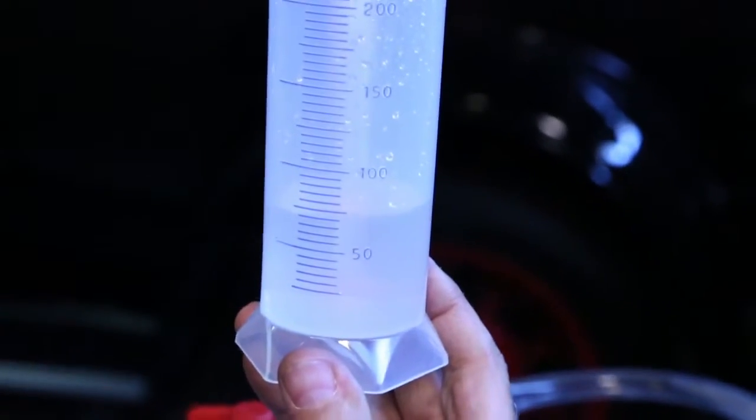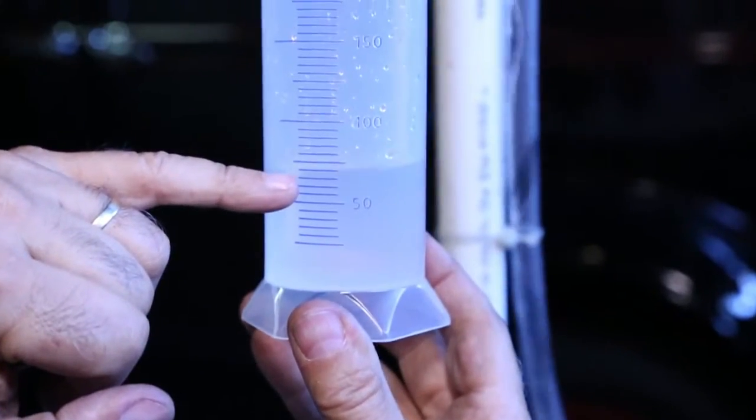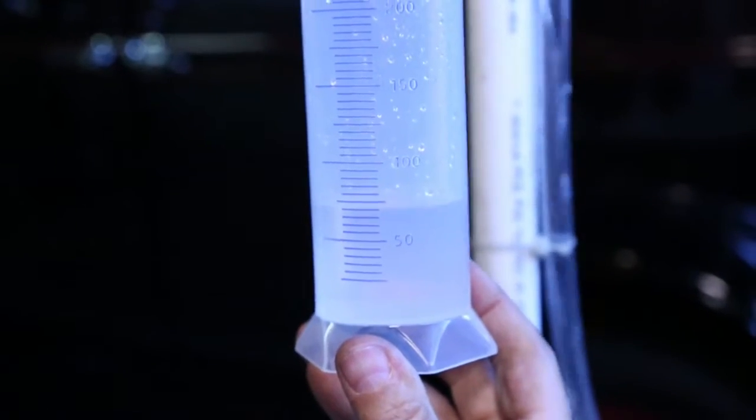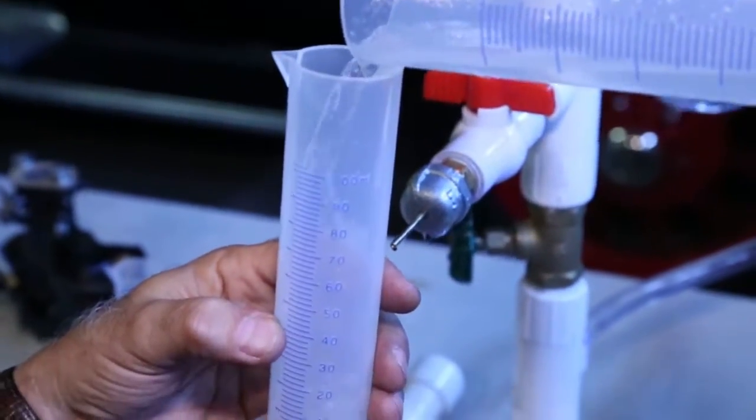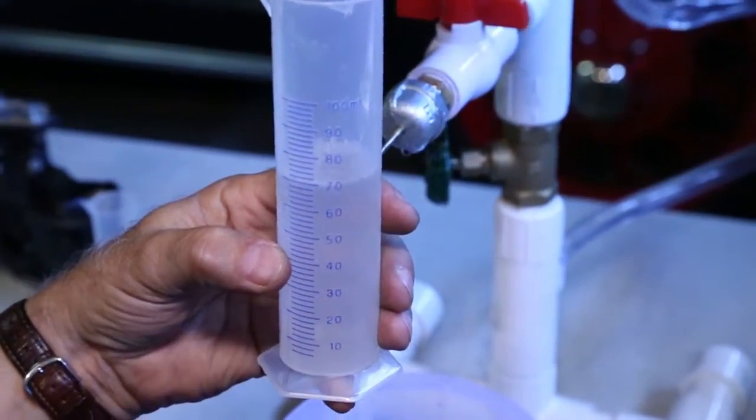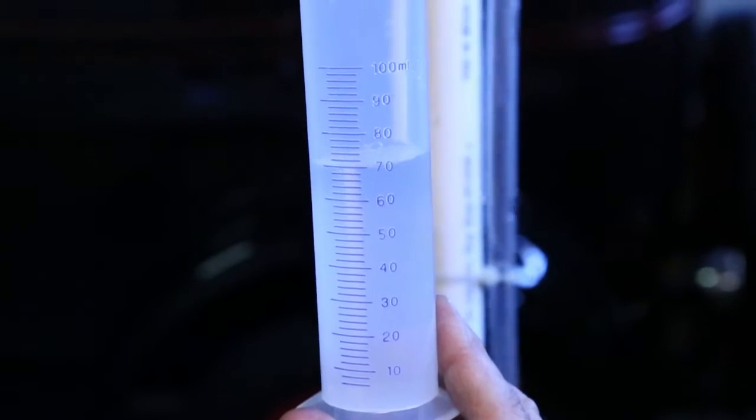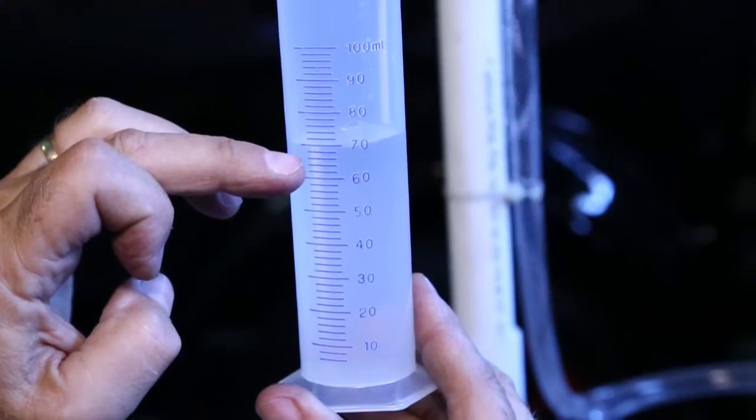So what did we get? Each line is 5 milliliters. So there's 50, 55, 60, 65. It's getting close to 70. If I wanted to check it a little better, I could put it in this beaker. And yeah, it's definitely right at 70 milliliters. This has a little finer grade. Every line is two milliliters here.